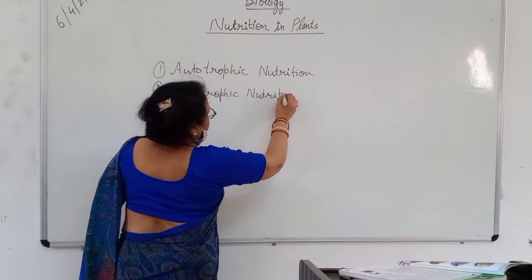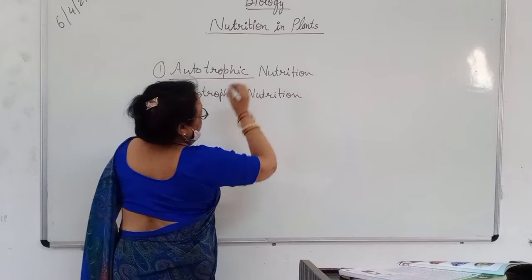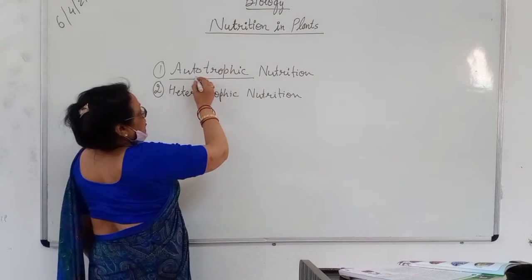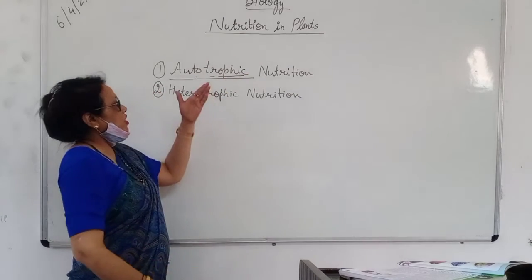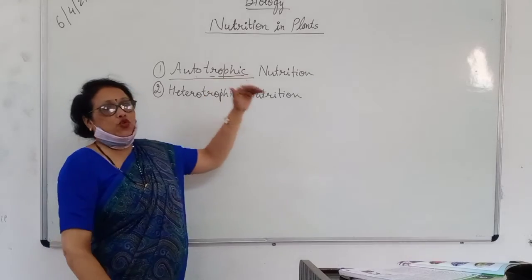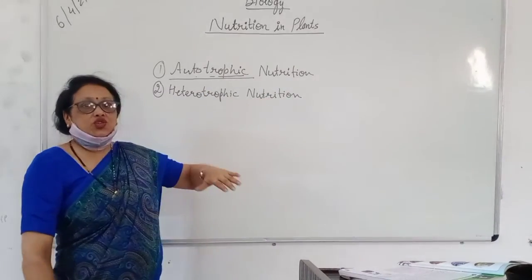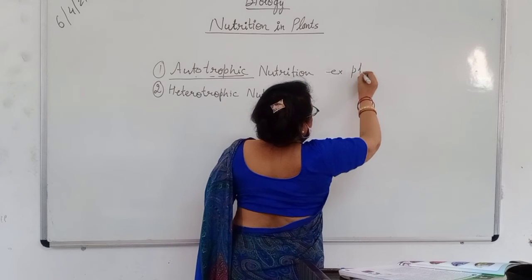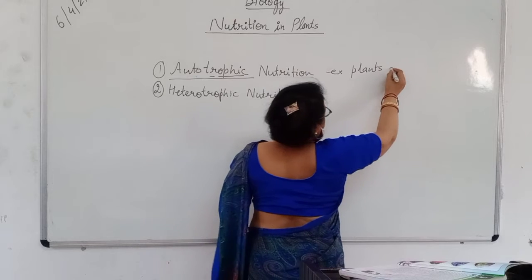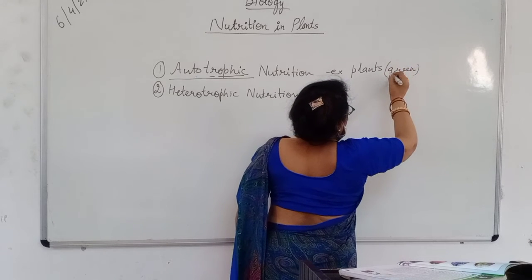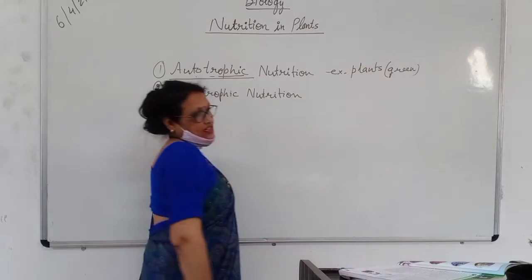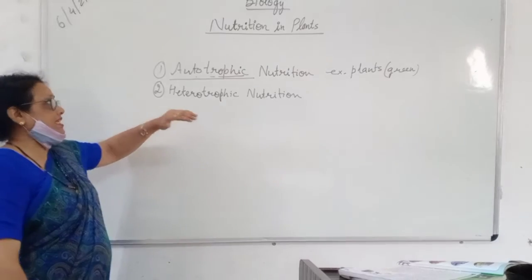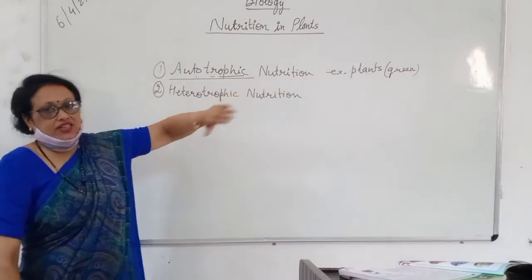What is autotrophic nutrition? जैसा कि इसके नाम से पता लग रहा है — auto means self and trophic means prepare. जब कोई organism खुद से अपना food prepare करता है अपनी body के अंदर, that is called autotrophic nutrition. The examples are green plants — they can prepare their own food, so they are called autotrophs. The organisms in which we see autotrophic nutrition, they are called autotrophs.